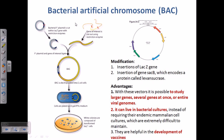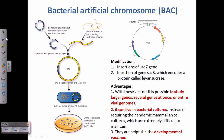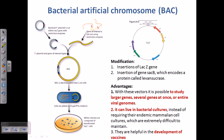Lastly, we must talk about the Bacterial Artificial Chromosome, which can also act as a vector — a suitable vector for transferring large fragments of DNA. Bacterial artificial chromosomes are, as the name suggests, chromosomes of bacteria.